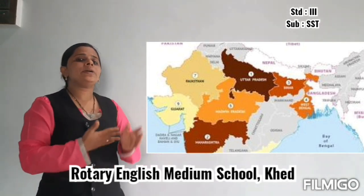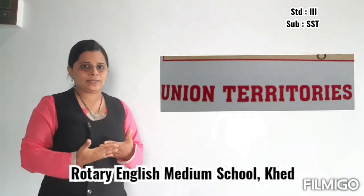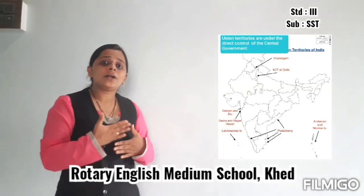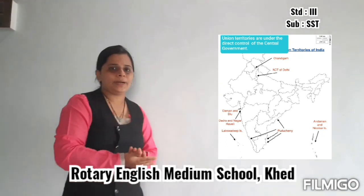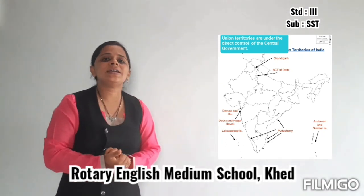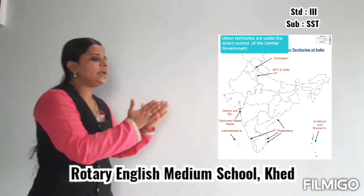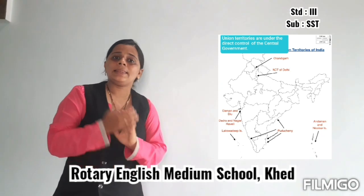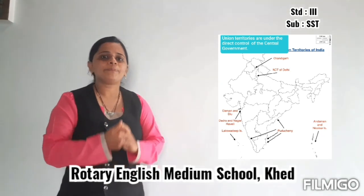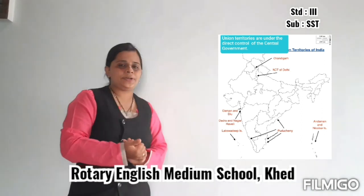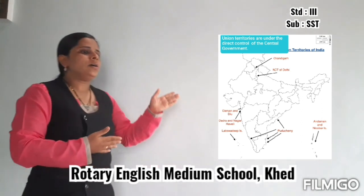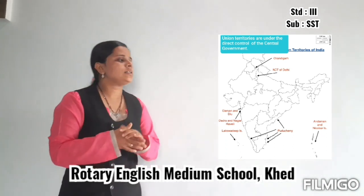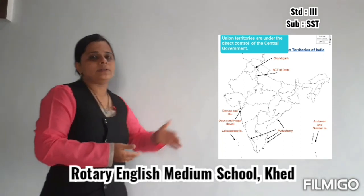Now we will discuss Union Territories. Union Territories are under the control of the central government, not the state government. There are 7 Union Territories in India, including the National Capital Territory of Delhi.